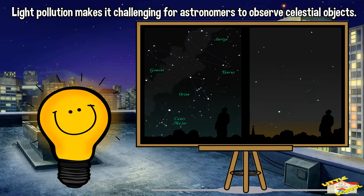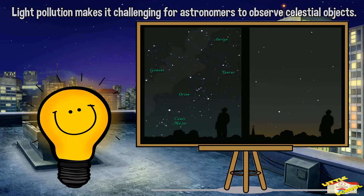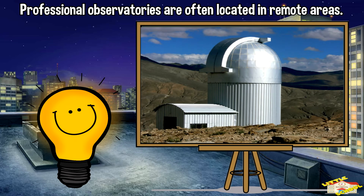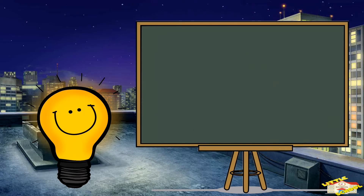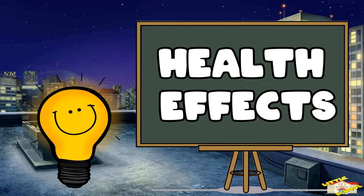Astronomical observations: light pollution makes it challenging for astronomers to observe celestial objects. Professional observatories are often located in remote areas to escape the effects of light pollution, allowing scientists to study the universe more effectively.